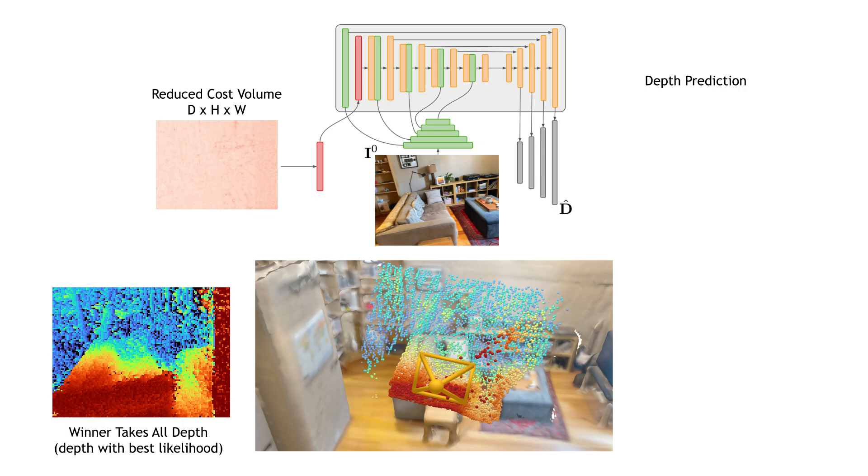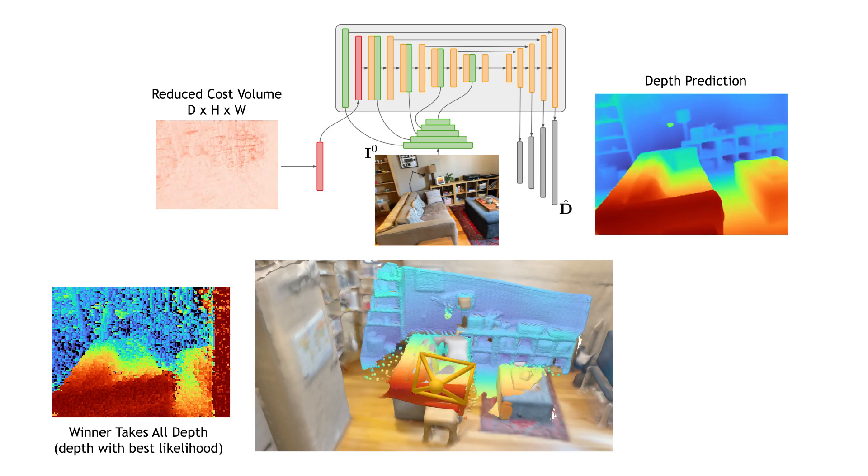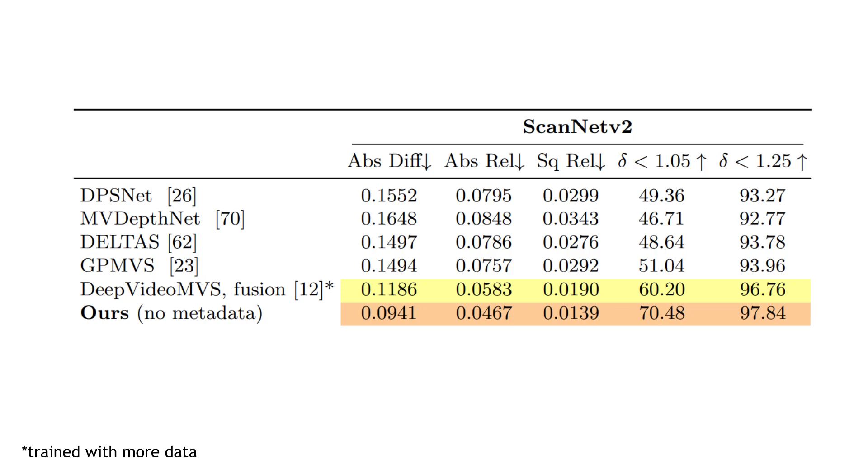We pass the reduced cost volume to a UNet, along with features from a separate image encoder to enforce a strong image prior. What we've just described produces a strong baseline already, and exceeds the state-of-the-art for depth estimation from video.